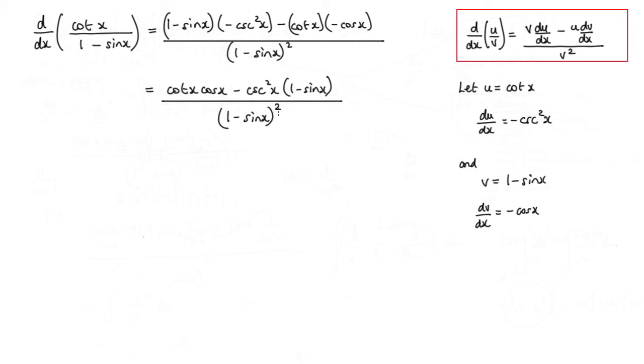Now we could actually split this into two separate fractions. So we could take this part here and put it over 1 minus sin x squared, and we could take this part here. And when I do that, I could actually cancel one of these factors here of 1 minus sin x. However, this is a valid solution. If you want to simplify it further, you can.